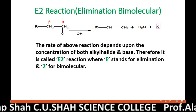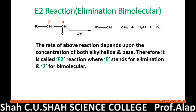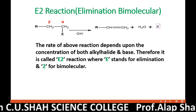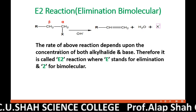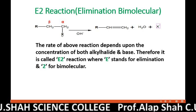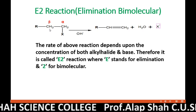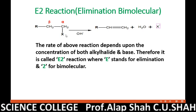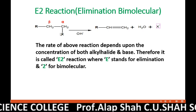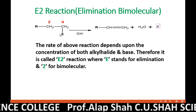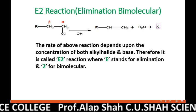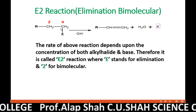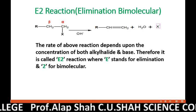First let us understand what is E2 reaction. In the given example, you can see this is an alkyl halide with a halide group. This is the beta carbon from which the beta hydrogen and halogen from the alpha carbon are eliminated. This reaction is called an elimination reaction, and a new double bond is formed between the alpha and beta carbon.